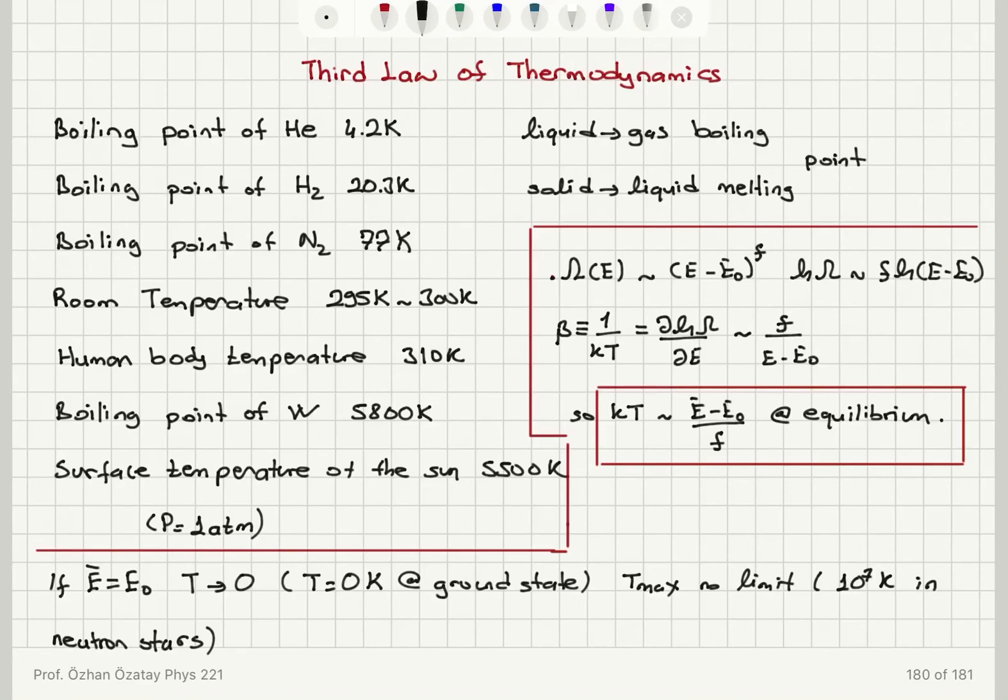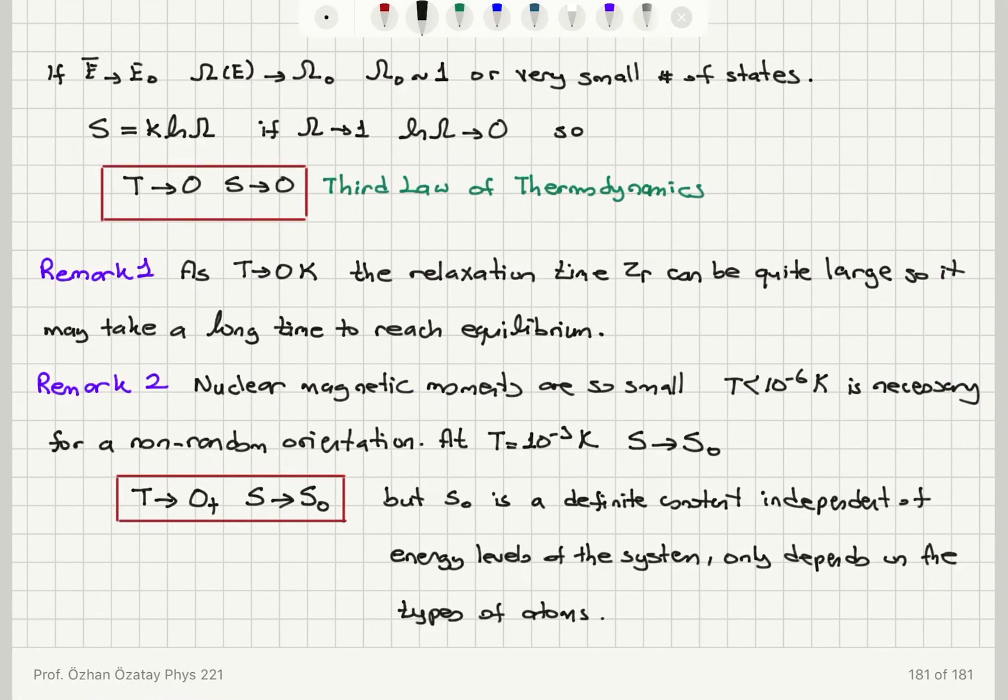The number of accessible states dependence on energy was E minus E zero to the power number of degrees of freedom. And we found that the thermal energy means mean energy above the ground state energy per degree of freedom at equilibrium. And as the temperature approaches zero, that means the absolute temperature, the mean energy approaches the ground state energy, or we have the number of accessible states becoming very, very small. And there is no limit for maximum temperature. The highest we know of is 10 to 7 Kelvin in neutron stars. And if omega becomes one, exactly one, entropy approaches zero. That's the third law of thermodynamics.